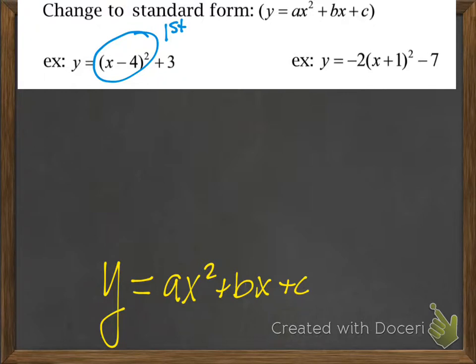So first we've got to square that binomial to take care of the exponent. So doing that, we foil it out and get x squared minus 4x minus 4x plus 16.